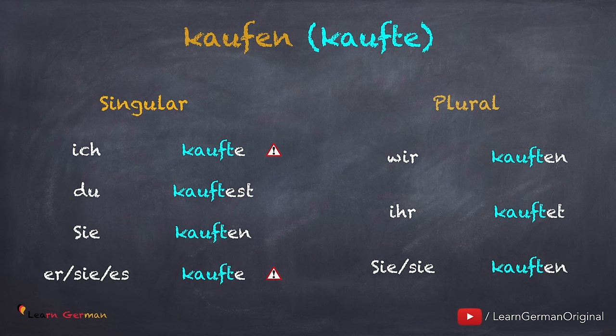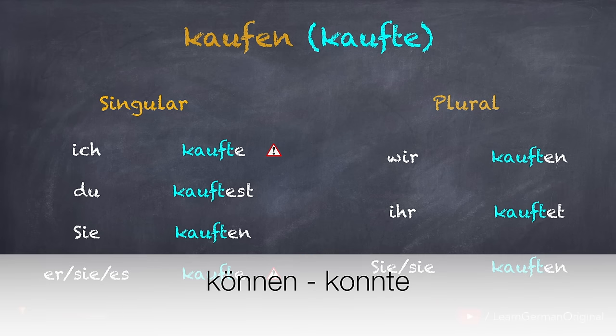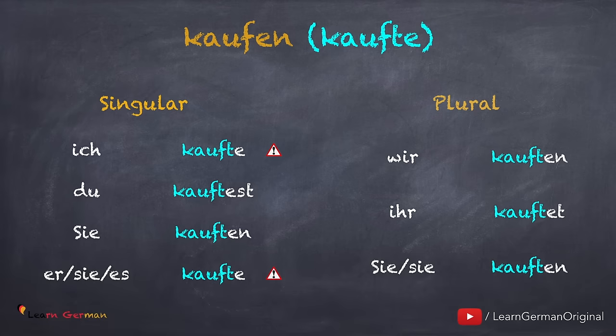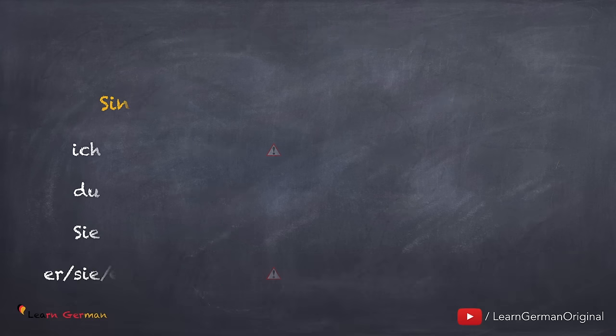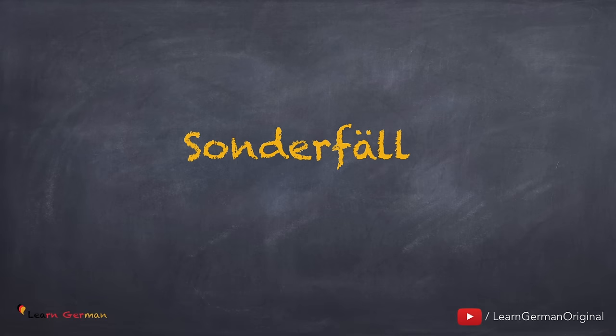It's important to mention one thing here. When we did the Präteritum für Modalverben, we learned that the Präteritum does not take the Umlaut — for example, können, but Präteritum konnte. This does not happen in the case of regelmäßige Verben. Hören, hörte — the Umlaut does not disappear in the Präteritum.